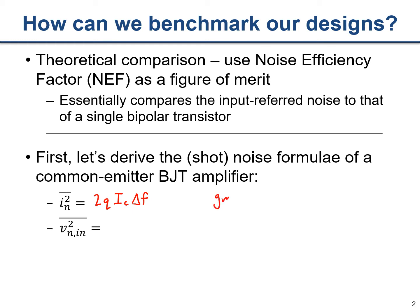The transconductance for a BJT is I_C divided by φ_T, very similar to a sub-threshold MOSFET. Both are exponential-mode devices; however, the BJT doesn't have the sub-threshold coefficient n in its transconductor model, so BJTs actually have better transconductance efficiency than a sub-threshold MOSFET. The input-referred noise is computed by dividing the current noise by g_m squared: 2Q·I_C / g_m².